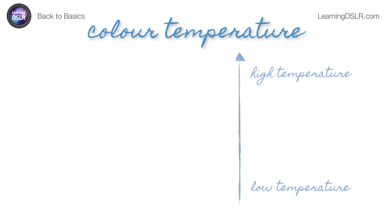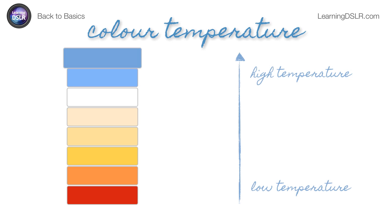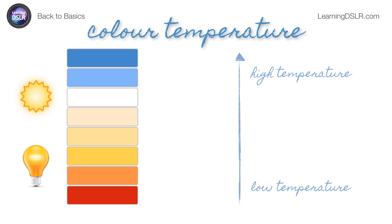The light around us is measured as a temperature in the sense that things that are hot but not very hot, like a candle, actually burn very red-orange, and things that burn very strongly, like the sun, produce almost perfect white light. And then of course we're also in an environment with blue skies and other factors coming into play in terms of the color cast that can affect our photos.